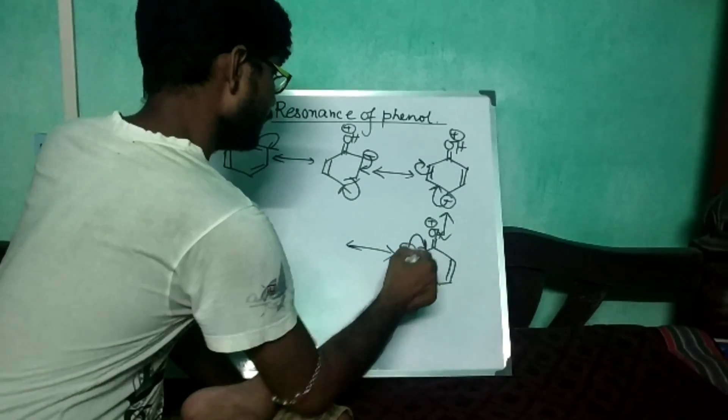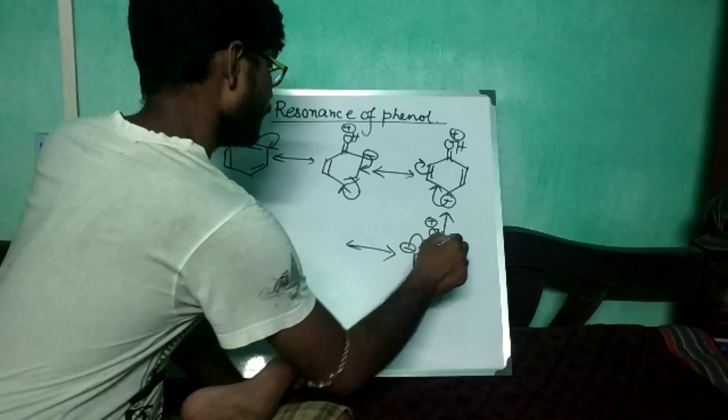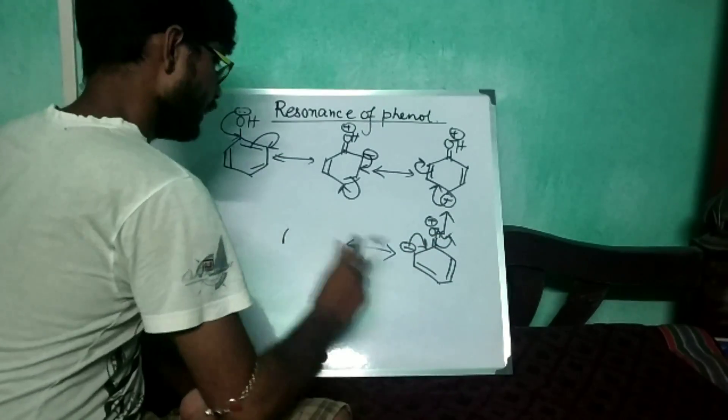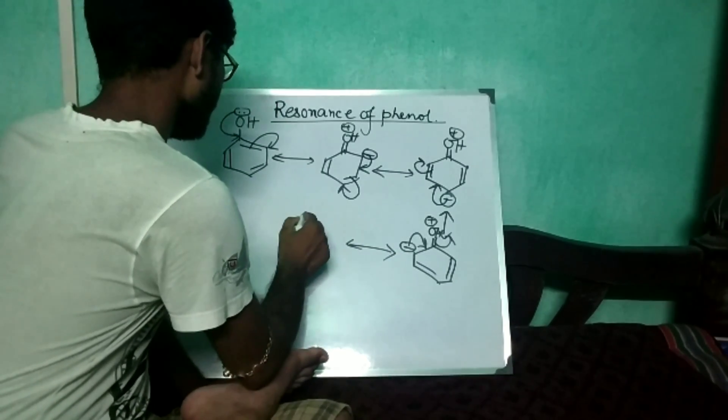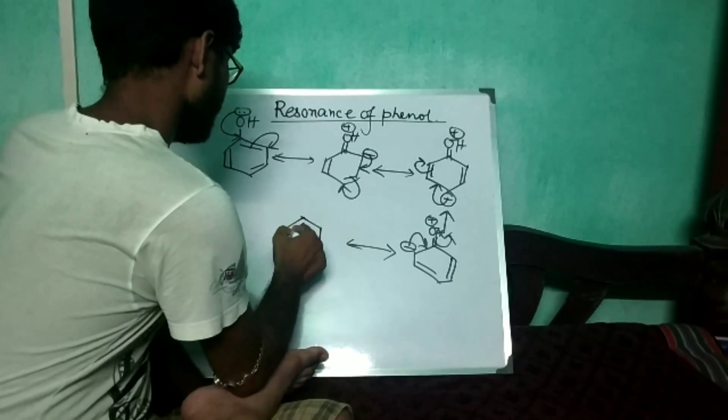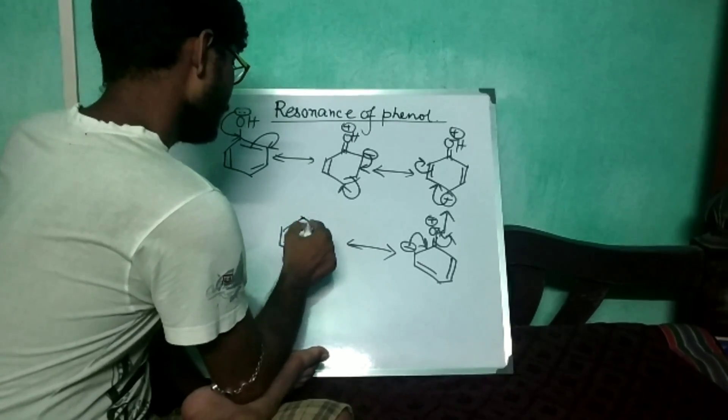The negative charge will make a bond in this position and the double bond becomes free, and finally we get this double bond here.